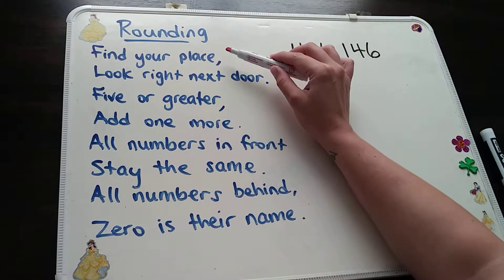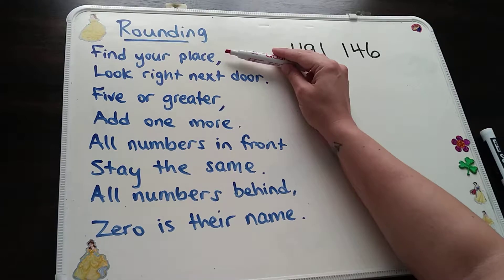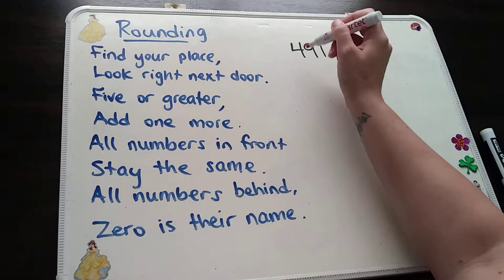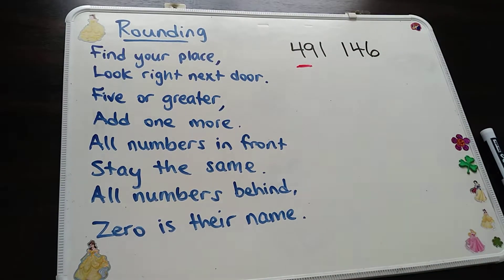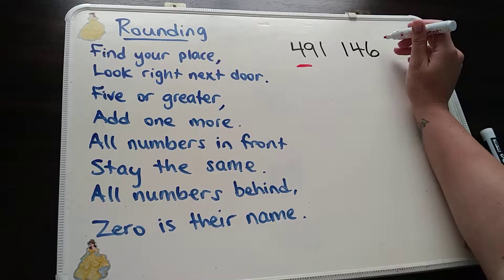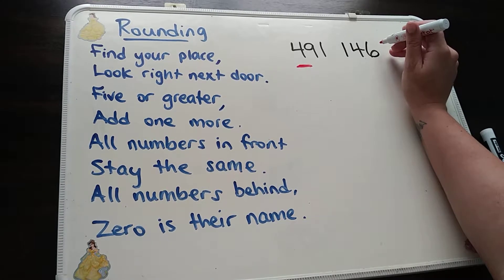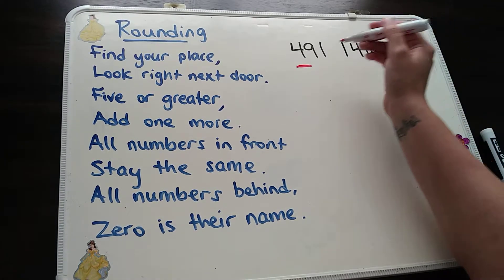So for this number, find your place, look right next door. For find your place, the number is here and I'm rounding it to the nearest 100,000. It really does help if you know your place value very, very well. So please make sure to double check your place values before you actually start your rounding, because if you get mixed up on the actual place value, then your answer will be wrong. So please double check that.